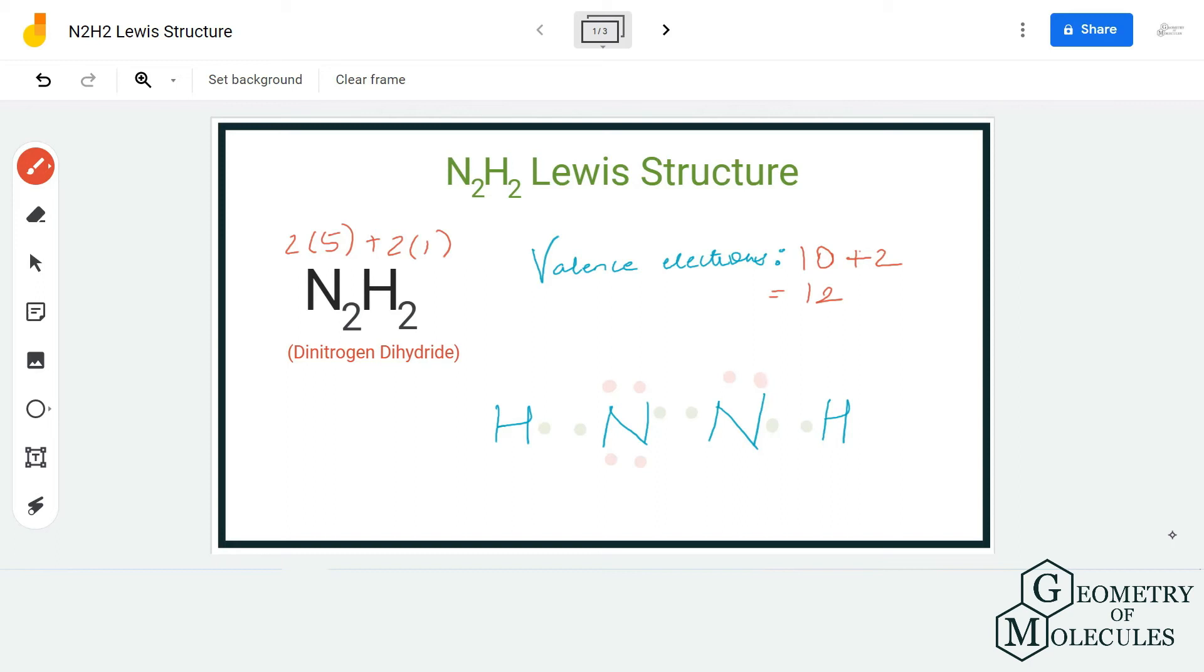We are going to place the remaining electrons over here: 8, 10, and 12. Now doing this we will have a complete octet for one nitrogen atom whereas the other one will not have a complete octet and this one just has six valence electrons.